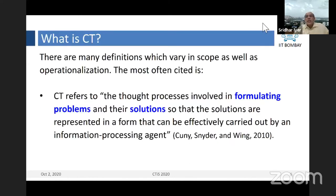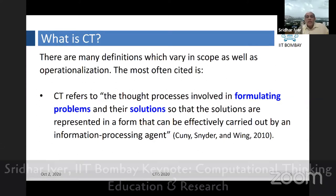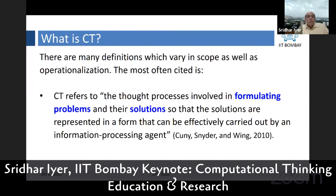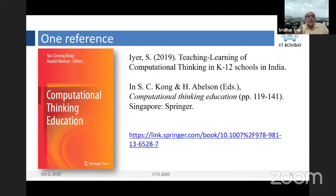Computational thinking refers to the thought processes involved in formulating problems and their solutions, so that the solutions are represented in a form that can be effectively carried out by an information processing agent. This is the classical definition, most often cited, and we'll be hearing Professor Jeannette Wing herself later today. One reference I can provide is the book called Computational Thinking Education, edited by Professor Suchong Kong of Hong Kong University and Professor Harold Abelson of MIT, which contains a chapter on computational thinking in India written by me. Most of this talk is based on that chapter.